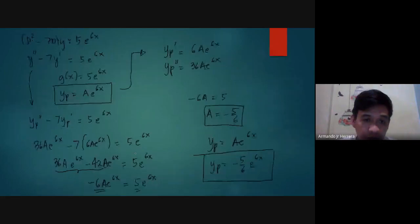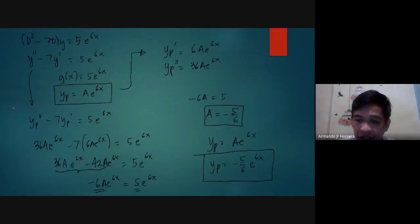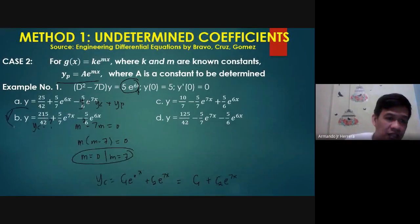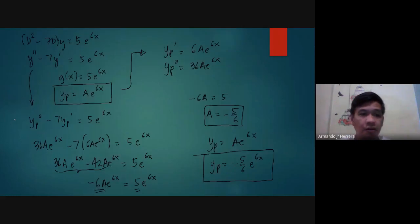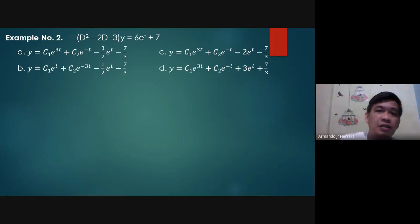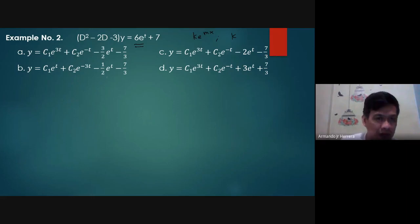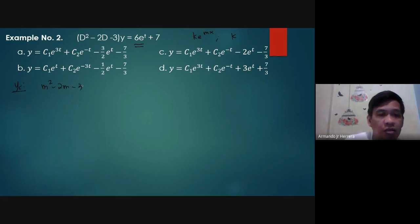Let's try example two. We have D squared minus 2D minus 3 applied to y equals 6e to the t plus 7. The right-hand side is a combination of ke to the mx and a constant. Solving for yc first: m squared minus 2m minus 3 equals 0, which factors as m minus 3 times m plus 1 equals 0, giving m equals 3 and m equals negative 1.